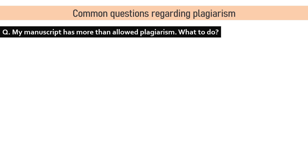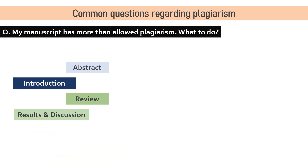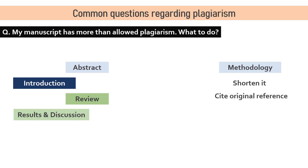If your manuscript is showing more than the permissible plagiarism, sections like abstract, introduction, review, results, and discussion should not have much plagiarism if you have written them yourself. If it is still there, rephrasing or citing the original work should be done. Materials and methods encounter the maximum degree of plagiarism, as the same techniques are followed by many studies. You can minimize it by shortening the methods or citing previously published papers.